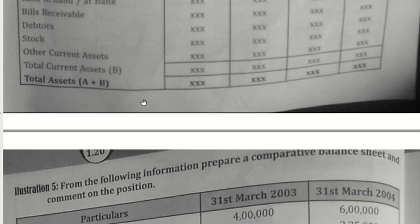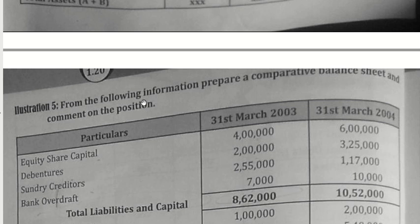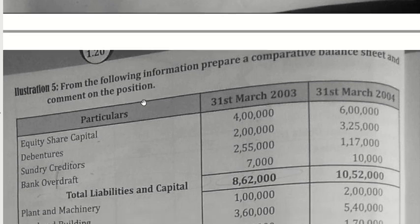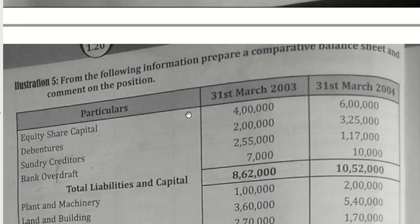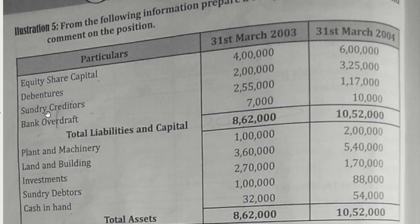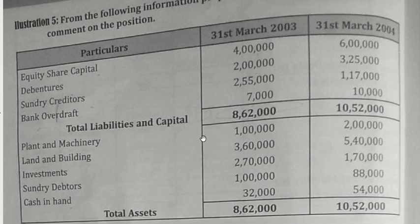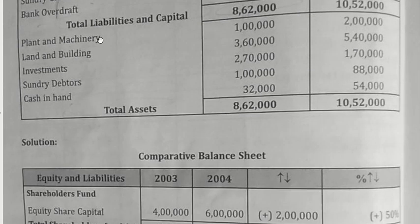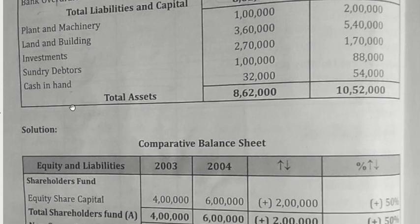Now let us look at our first question: from the following information, prepare a comparative balance sheet and comment. The items given include equity share capital, debentures, sundry debtors, bank overdraft, and others. The total liabilities and capital are given, along with the asset side — plant and machinery and land and building as fixed assets, investments as fixed assets, sundry debtors as current assets, and cash in hand as current assets.